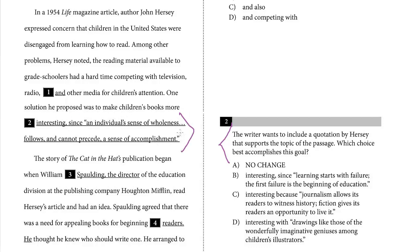So for question two, we want a quote by Hersey that supports the topic of the passage. Option A — about wholeness and accomplishment — doesn't fit. Option B — learning begins with failure — doesn't fit either. Option C — journalism and fiction allowing readers to witness or live history — is also off-topic. Option D says 'interesting with drawings like those of wonderfully imaginative geniuses among children's illustrators.' This is definitely what the passage is about. So the answer is D. Keep that in mind — always pay attention to the call of the question.